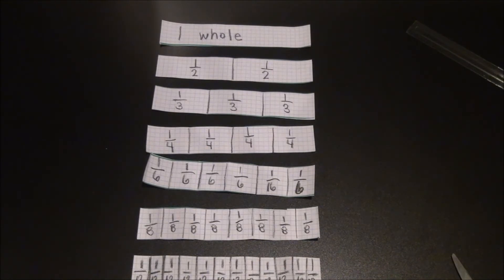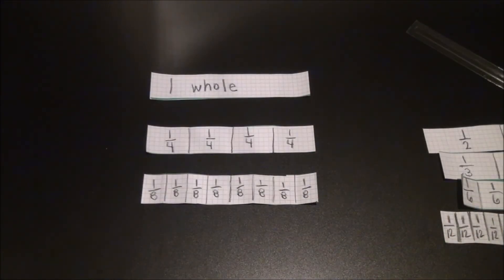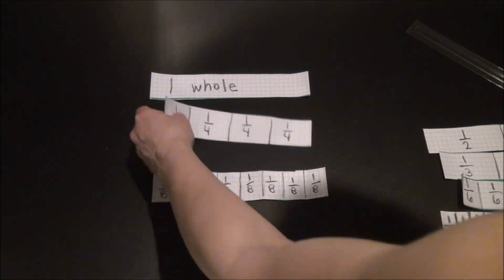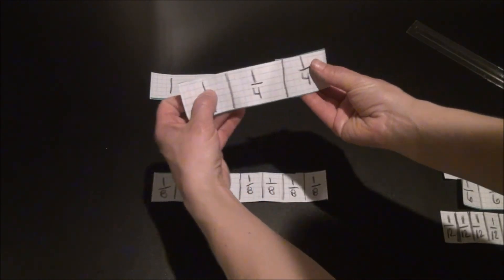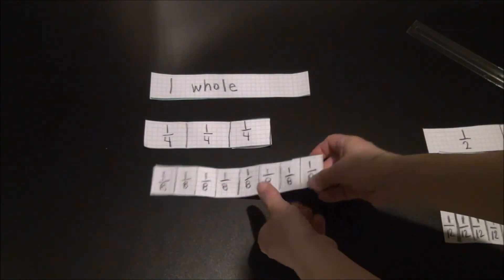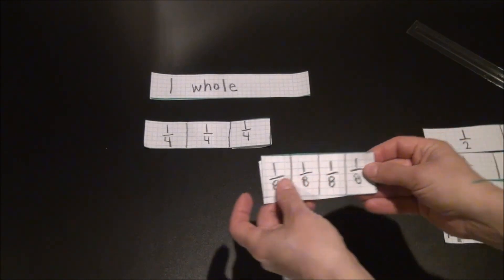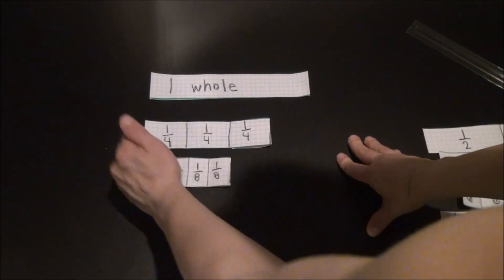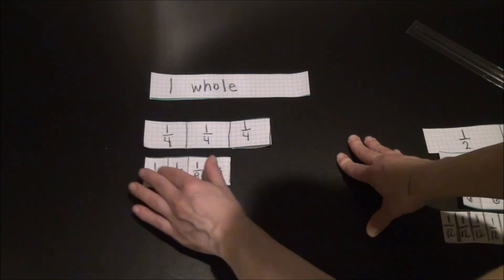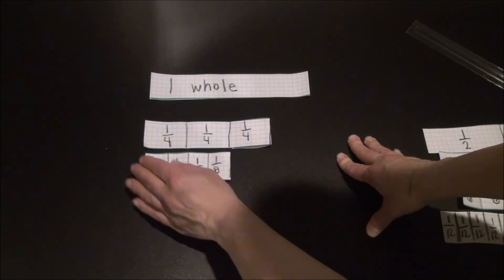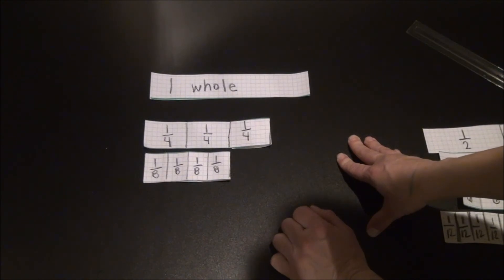Remember, Jackson traveled three-fourths of a mile, and Reagan traveled four-eighths of a mile. At this point, pause the video and use your models to determine who traveled further. Jackson at three-fourths of a mile or Reagan at four-eighths of a mile. As you notice, I've removed all of the fraction bars that we don't need to solve this problem. At this point, I'm able to focus on Jackson, who has traveled three-fourths of a mile, and Reagan, who has traveled four-eighths of a mile. If I line both of these fractions up to start at the same point, you can see that Jackson actually traveled a greater distance.